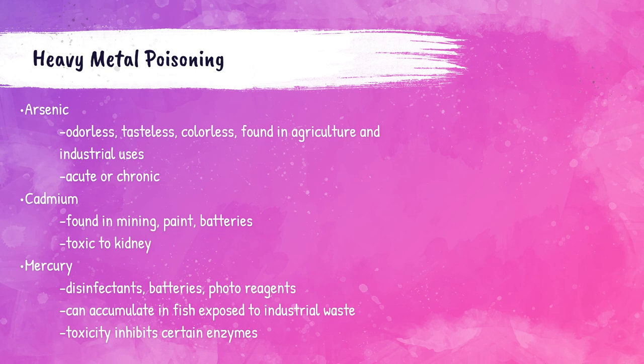Patients can also be poisoned by heavy metals such as arsenic, cadmium, and mercury. Arsenic is a tasteless, colorless, and odorless metal found in agriculture with industrial uses; patients can experience acute or chronic arsenic poisoning. Cadmium is found in paint, batteries, and mines, and can cause kidney failure. Mercury is found in batteries and disinfectants — its toxicity can inhibit certain enzymes, and it can accumulate in fish exposed to industrial waste, poisoning people who consume them.